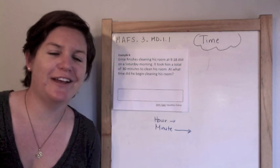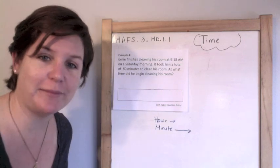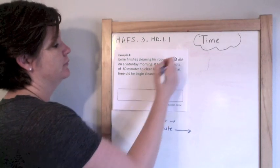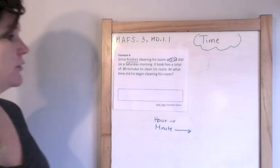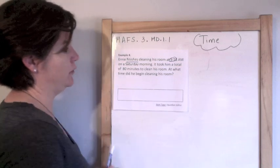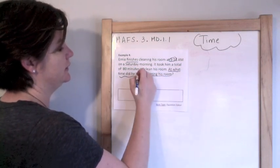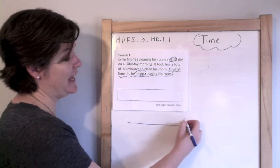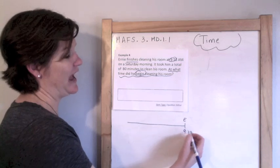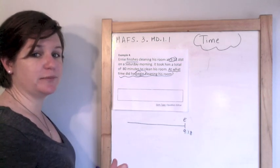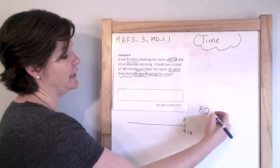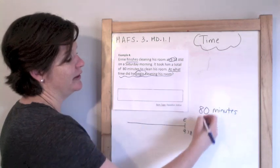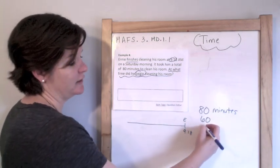Example 4. Ernie — I must be in a Sesame Street kind of mood today. Ernie finishes cleaning his room at 9:18 on a Saturday morning. It took him a total of 80 minutes to clean his room. At what time did he begin cleaning his room? So this time I'm going to use a number line. I know the end time is 9:18, so I have to go backwards. I need to go backwards a total of 80 minutes. So I know that I could say first we go 60 minutes back and then 20 minutes back, because 60 minutes would be an hour.